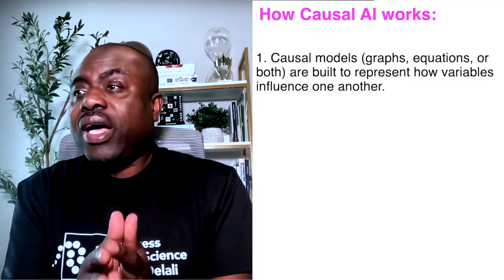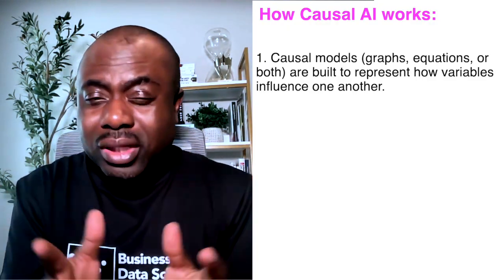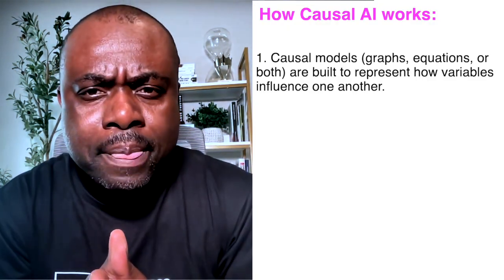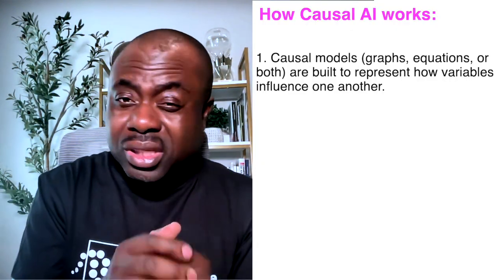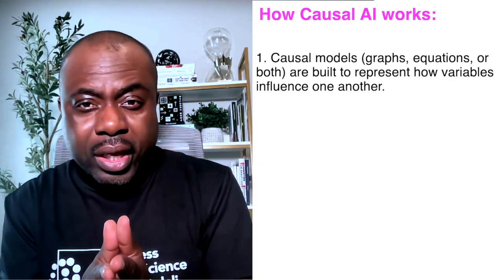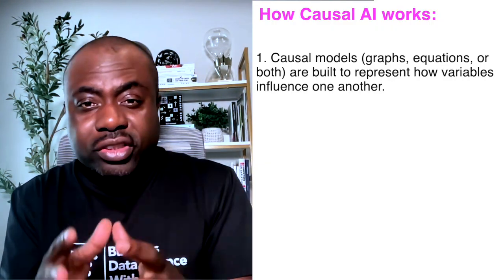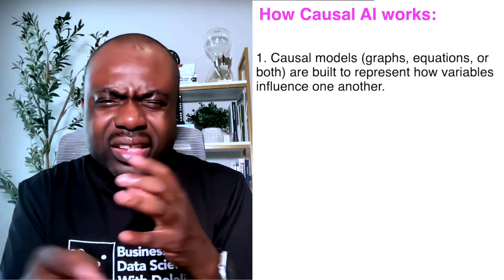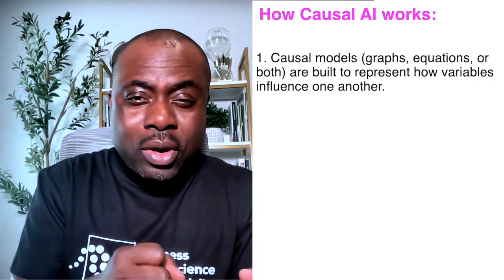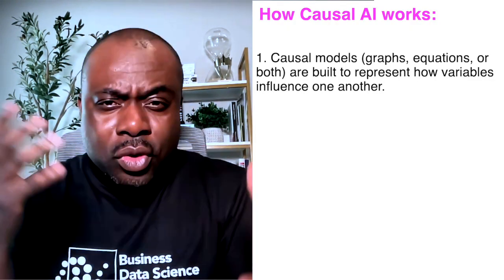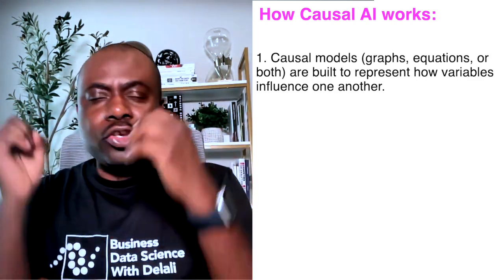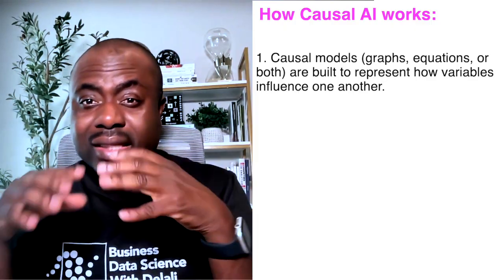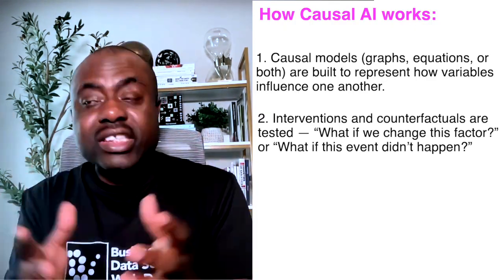How does causal AI work? First, it starts by building causal models — this could be a graph model, equations, or a combination of both. These models focus on explaining and representing how one variable affects other variables, essentially illustrating how one variable influences the other.